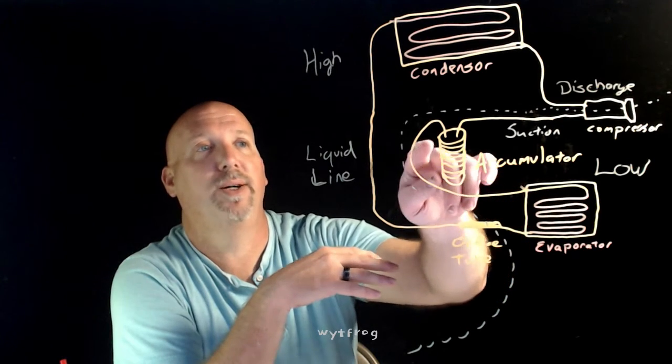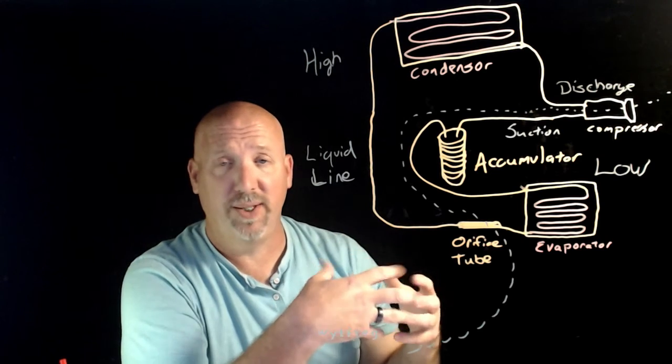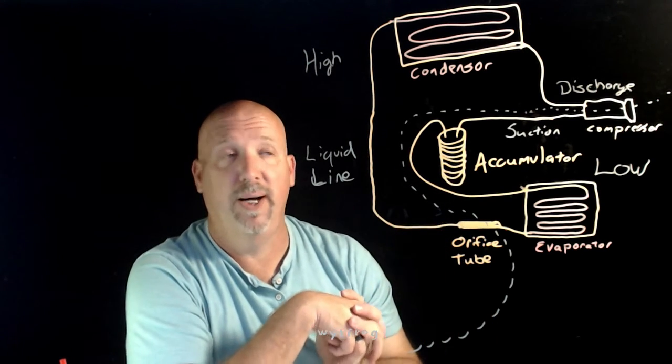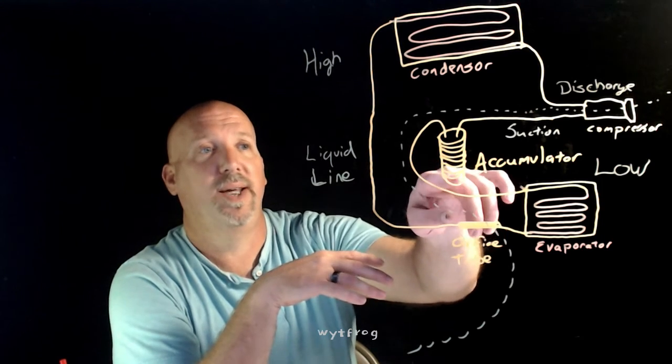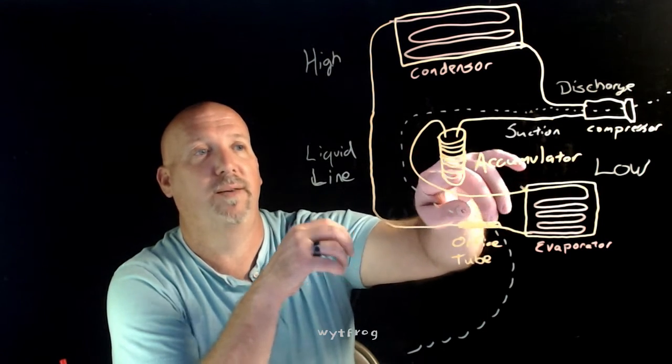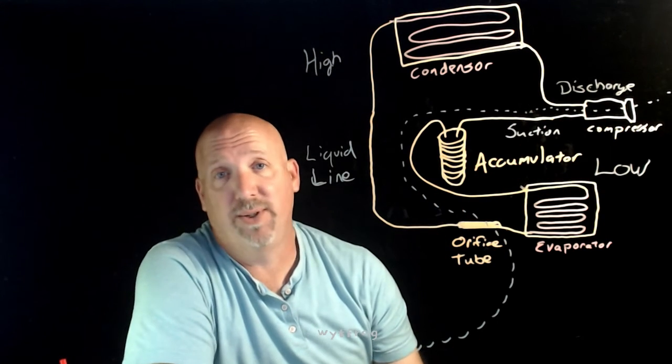All that low pressure vapor will travel to the accumulator. That way, if there's any refrigerant that's not boiled off, that's still liquid refrigerant, it'll stay in this accumulator until it actually is boiled off. That liquid refrigerant stays here until it boils off. All the vaporized refrigerant will come out of the accumulator and go to the suction side of the compressor. And the cycle starts again.